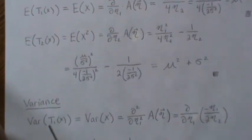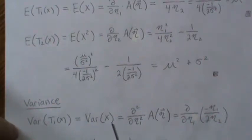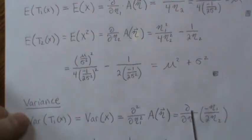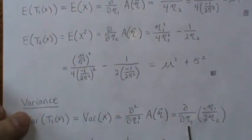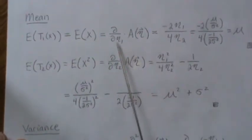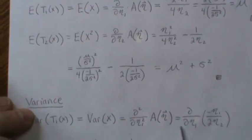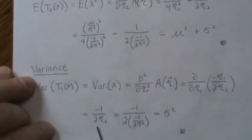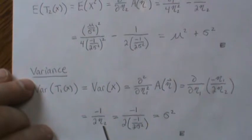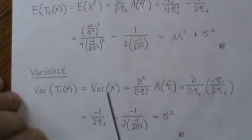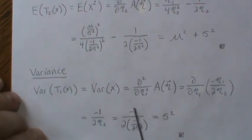We also get the variance from the exponential family. The variance of the first sufficient statistic — in this case x — is the second partial of the log partition. Think of it as the partial with respect to eta 1: we already took one partial, so we take the derivative again and we get this. Plugging in what we know about eta 2, things cancel and we get sigma squared — which is what we should get for the variance of x.